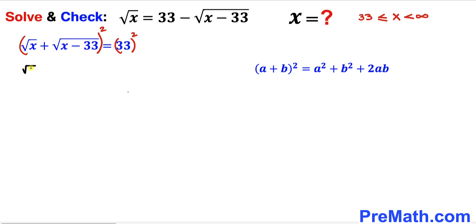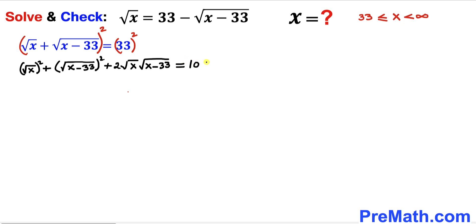Applying the identity, the left hand side becomes: (√x)² + (√(x−33))² + 2·√x·√(x−33), and the right hand side is 33² which equals 1089. The square and square root undo each other on both radical terms, so we are left with: x + (x − 33) + 2·√(x(x−33)) = 1089.